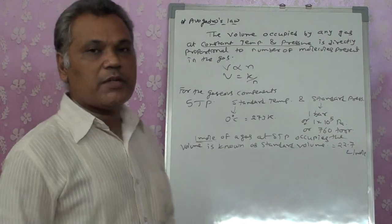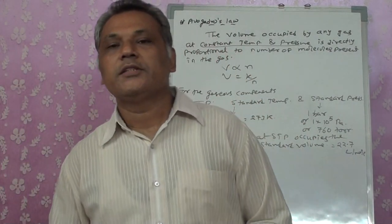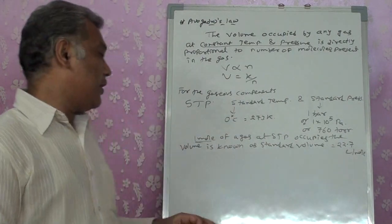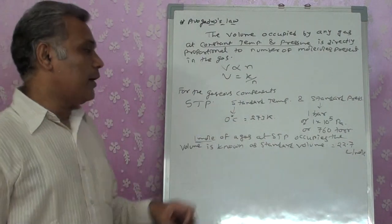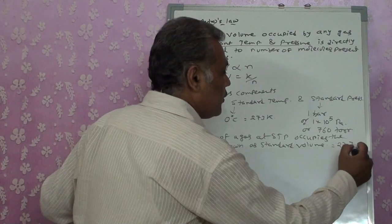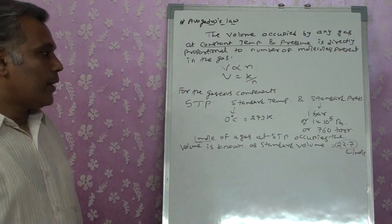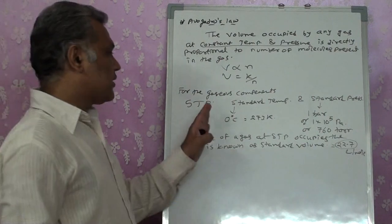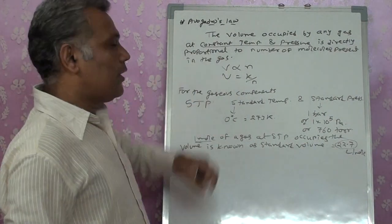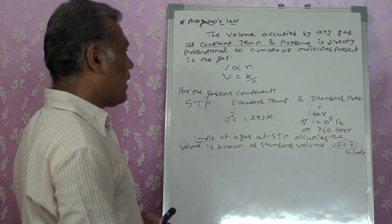The volume occupied by 1 mole of a gas at STP is known as the standard molar volume, and its value is 22.7 liters per mole. Since 1 mole is fixed, the number of molecules at STP is 6.022×10²³. The volume occupied by it will be 22.7 liters per mole.